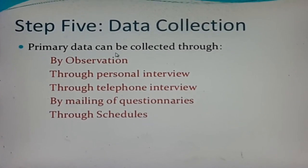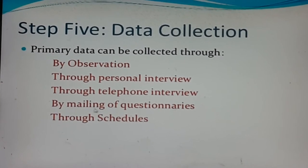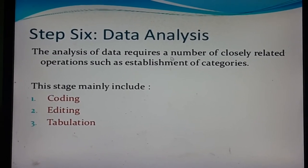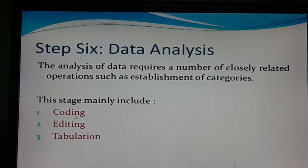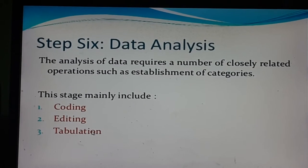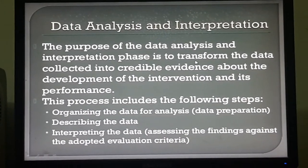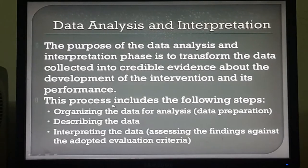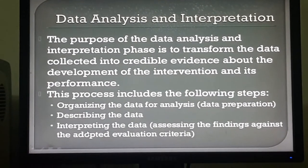The fifth step of the research process is data collection. Primary data can be collected through observation, through personal interview, through telephone interview, or by mailing of questionnaires or through schedules. The sixth step is data analysis. The analysis of data requires closely related operations such as establishment of categories. These stages mainly include coding, editing, and tabulation of the data. The process includes organizing the data, describing the data, and interpreting the data — that means assessing the findings against the adopted evaluation criteria.